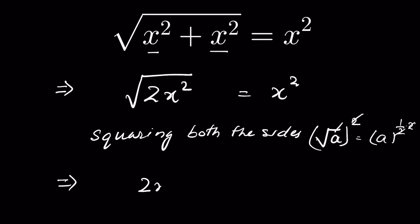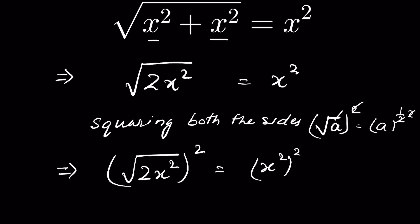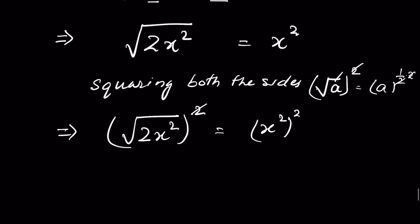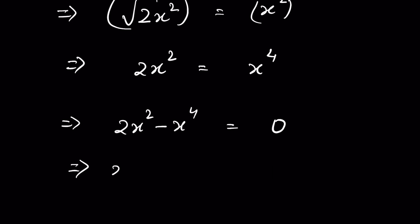So (√(2x²))² equals (x²)². We square both sides to balance the equation. Removing the square root with the square, we get 2x² = x⁴, or equivalently 2x² − x⁴ = 0. We can take x² common: x²(2 − x²) = 0.